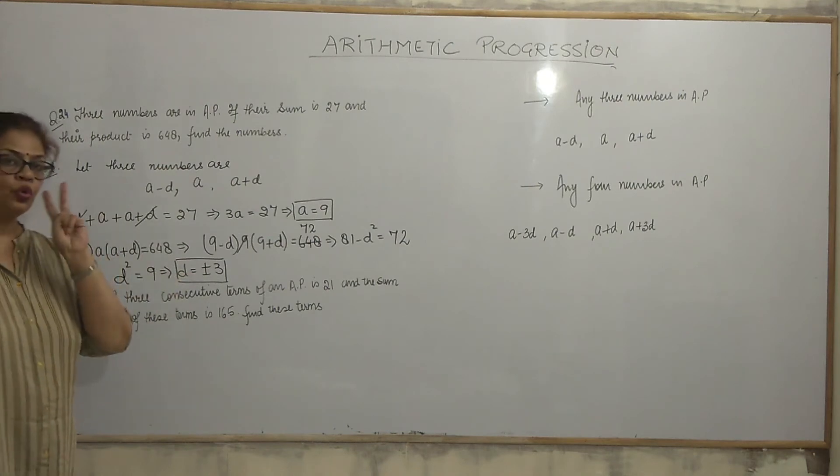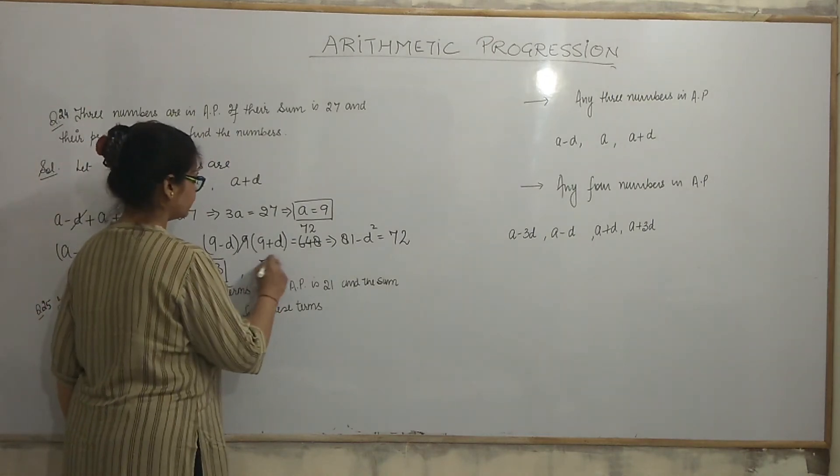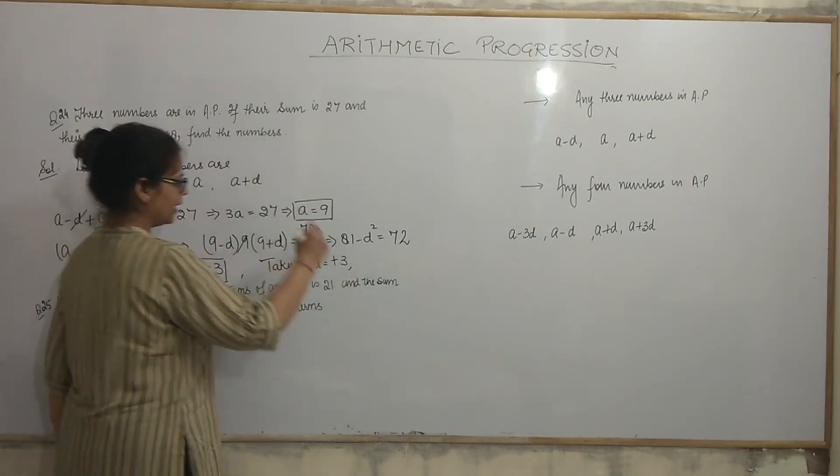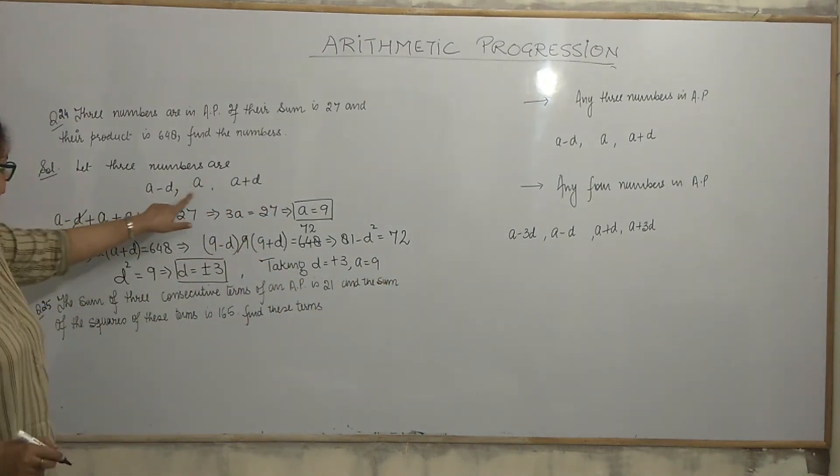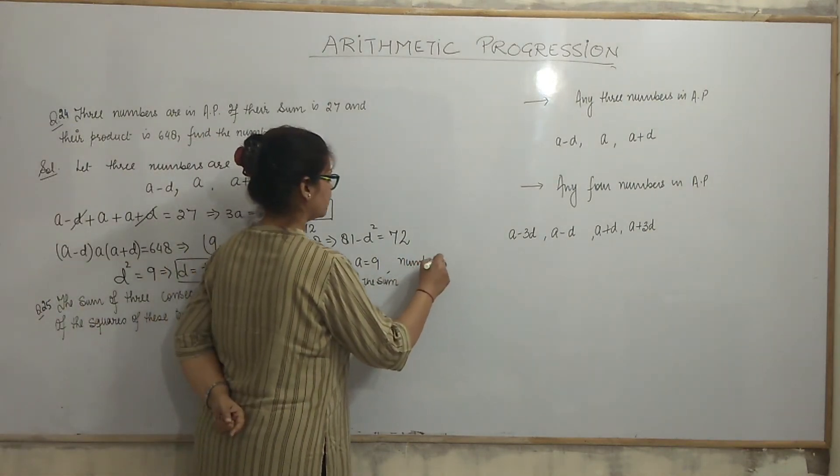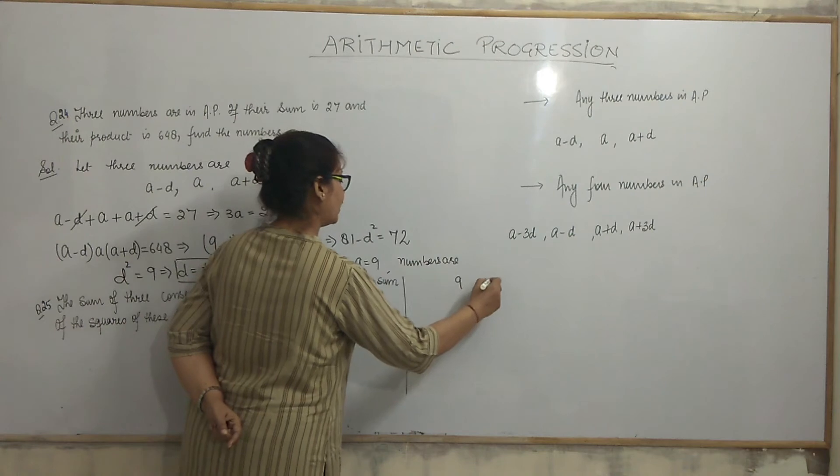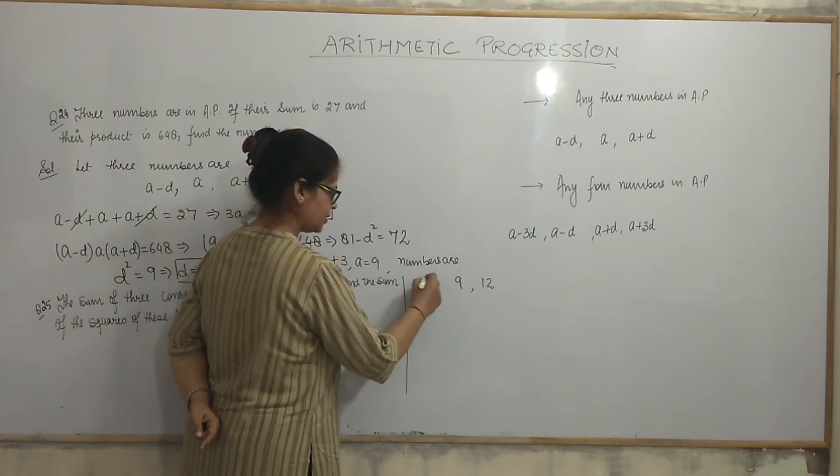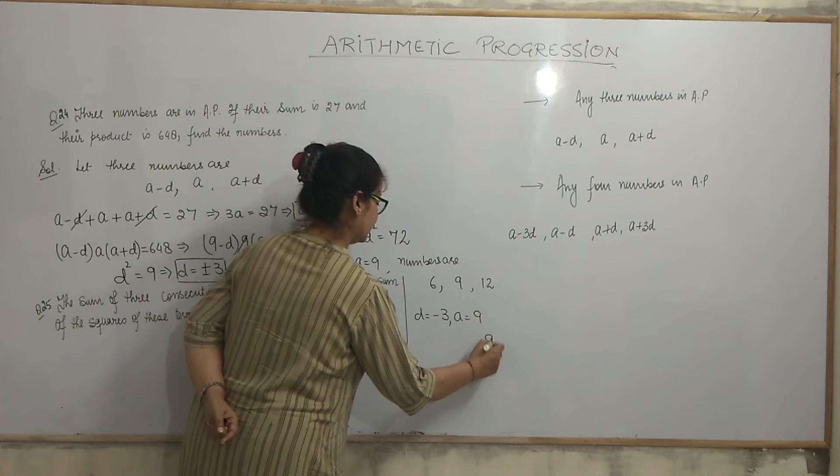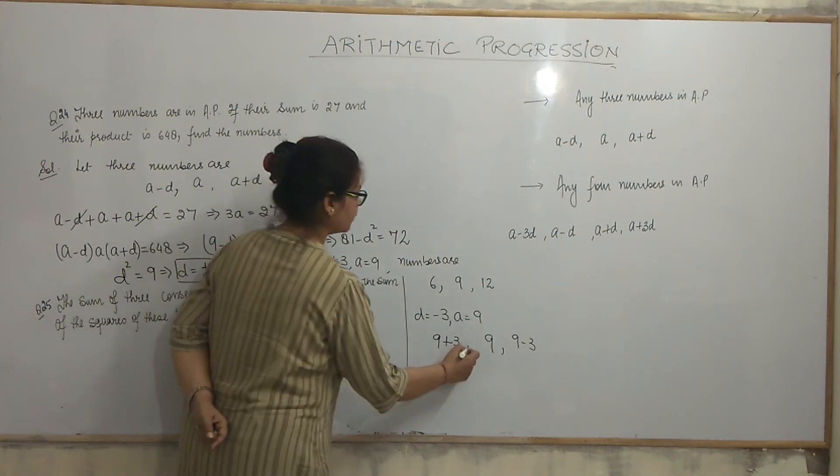Now, find the numbers. You have got two values of d. One is plus 3 and second is minus 3. So, taking d is equal to plus 3 and a is equal to 9. You know that numbers are a minus d, a, a plus d. Numbers are... a is 9, 12, you know, 9 plus 3 and 9 minus 3, 6. On the other hand, if you take d is equal to minus 3 and a is equal to 9. 9, 9 minus minus 3. So, 9 plus 3, 12, 9 and 6.